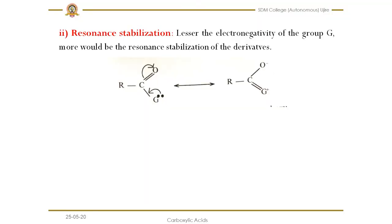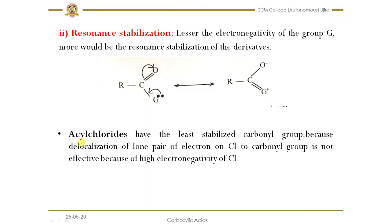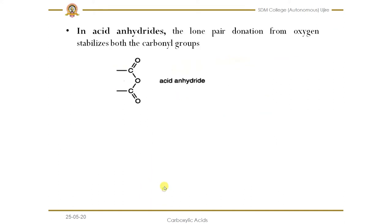Acid halides have the least stabilized carbonyl group because delocalization of the lone pair electron on Cl to the carbonyl group is not effective due to the higher electronegativity of the halogen. Since halogens are highly electronegative, they do not easily donate their lone pair toward resonance stabilization. That is why acid halides are the least stable.